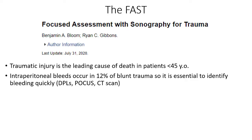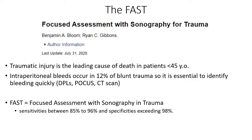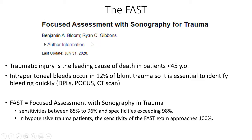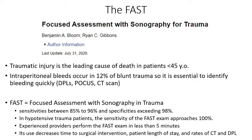POCUS is a more common approach now, and CT scans can also be used to determine intraperitoneal bleeding. The beauty of the FAST is it's fast - you can find out right at the bedside if the patient has intraperitoneal bleeding. Sensitivities range between 85 to 96% and specificities exceed 98%, and in hypotensive trauma patients the sensitivity approaches about 100%. Experienced providers can perform the FAST exam in less than 5 minutes, and its use decreases time to surgical intervention, patient length of stay, and the rates of CTs and DPLs.